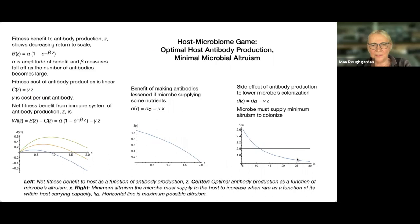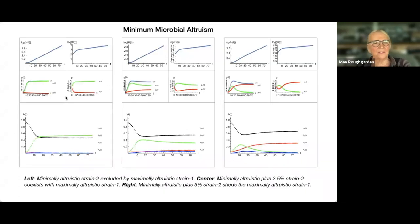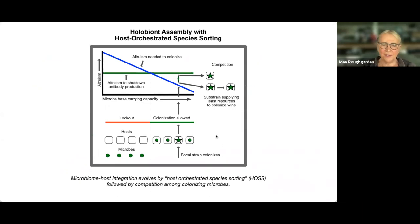What I've found is that if the microbe with carrying capacity of say 20 can enter the system, it should supply just a little more than the minimum necessary to enter. If it doesn't need to supply enough to shut down the antibody production, it just needs to supply enough to enter. These are simulations showing that. This leads to my final slide — a hypothesis for how the integration forms.